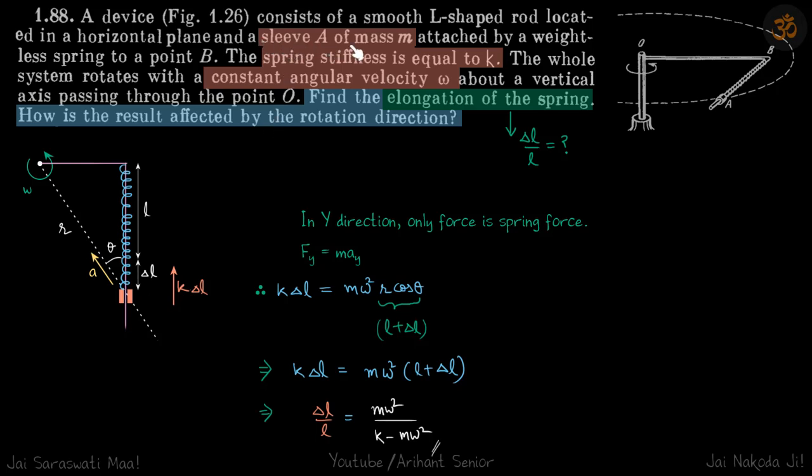We are given a sleeve A of mass m which is attached to a spring. The spring stiffness is k and the whole system is rotating with an angular velocity omega. So this rod, on one end of which there is a spring and a sleeve, this whole thing is rotating with angular velocity omega. So this is the top view of the same thing.